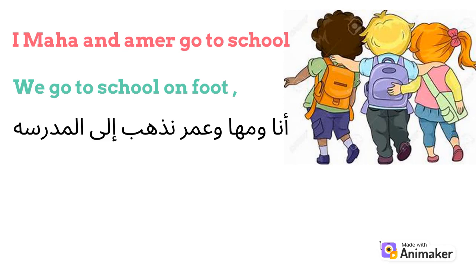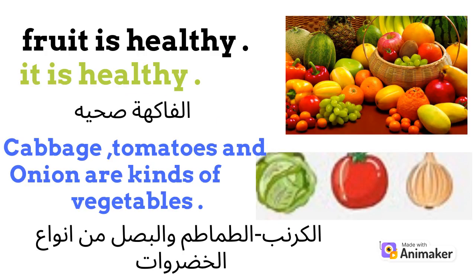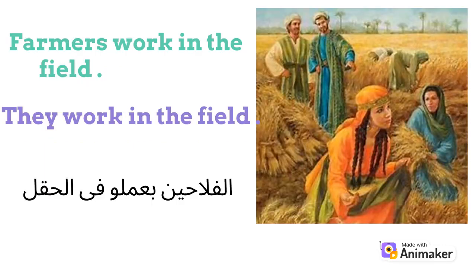and Amir go to school on foot. We go to school on foot. A monkey is a funny animal. It is a funny animal. Fruit is healthy. Cabbage, tomatoes, and onion are kinds of vegetables. Farmers work in the field.